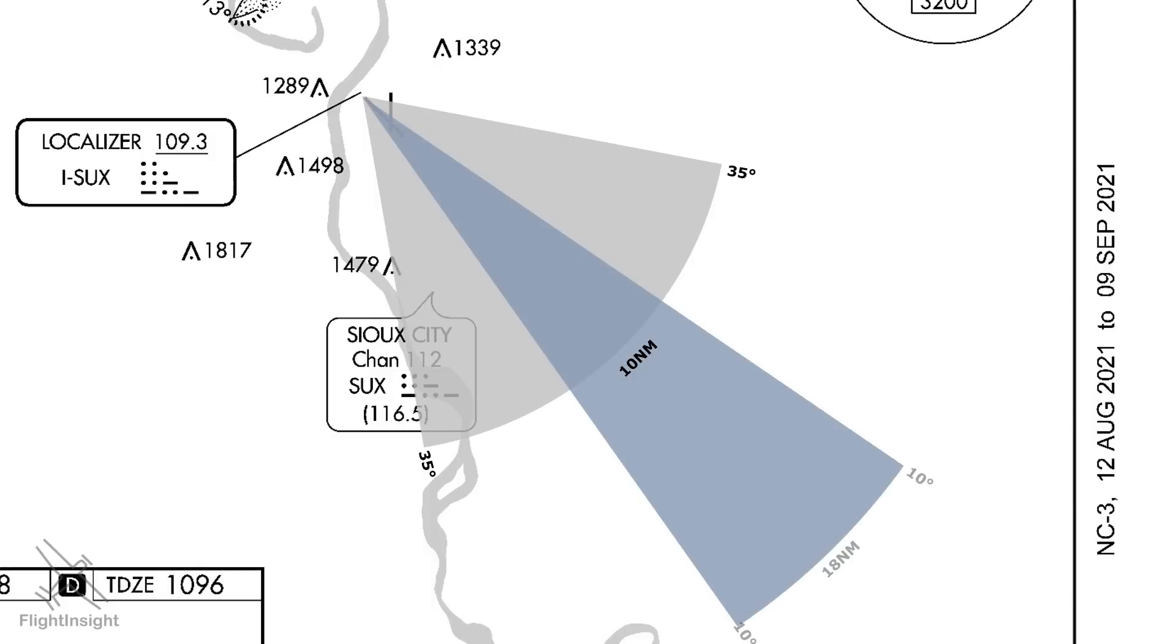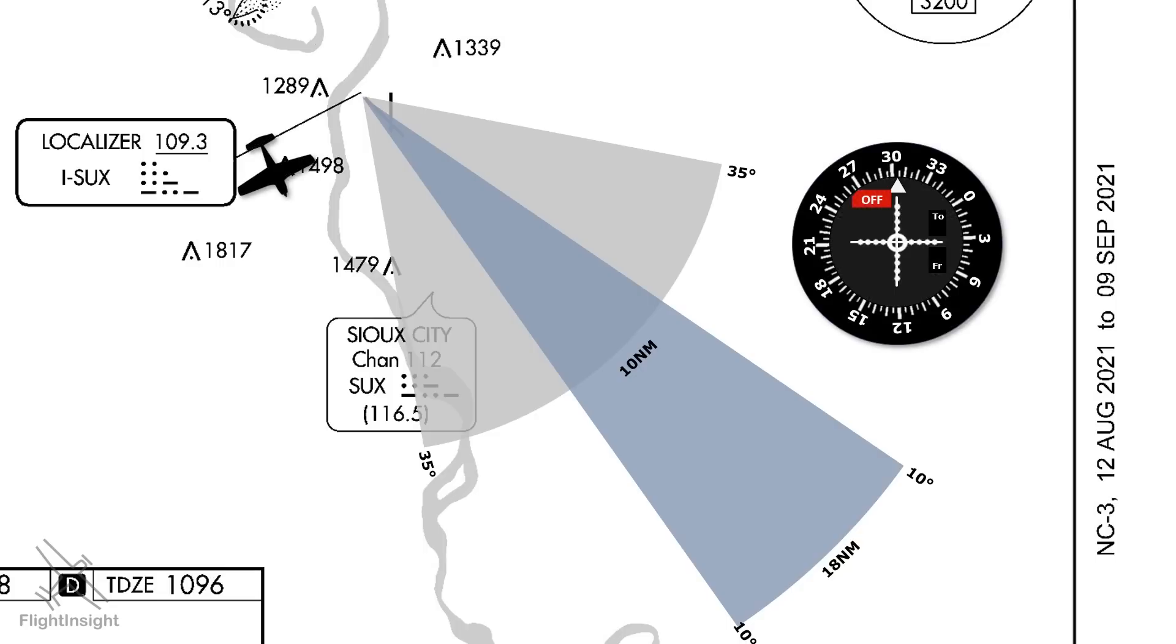While further out, to 18 miles, it's even more directional, only receivable 10 degrees to either side. This means that an aircraft being vectored from the opposite end of the approach would start off outside the operational service area. Even as it flies very close to the airport and would only receive the signal and have the glide slope and localizer needles come alive once inside the area.